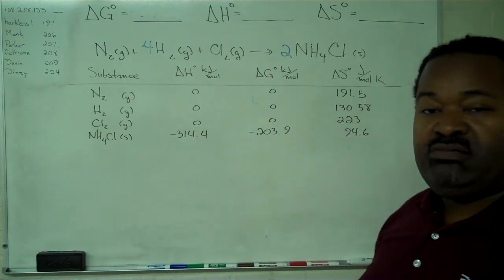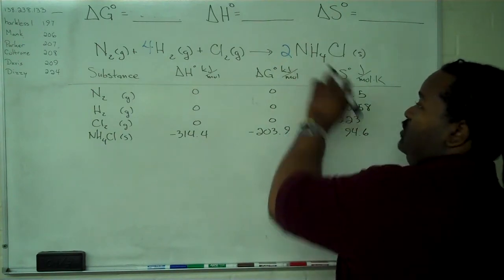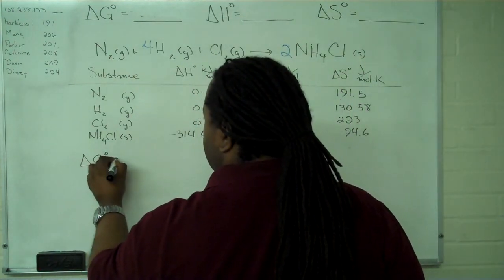Now that we have these values, we will apply the stoichiometric sum of products minus the stoichiometric sum of reactants. So for delta G standard,